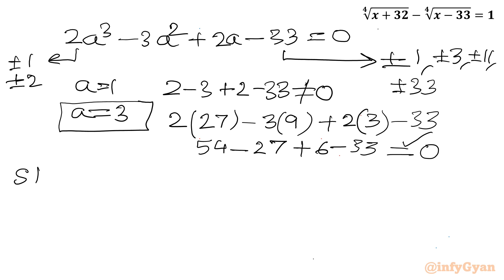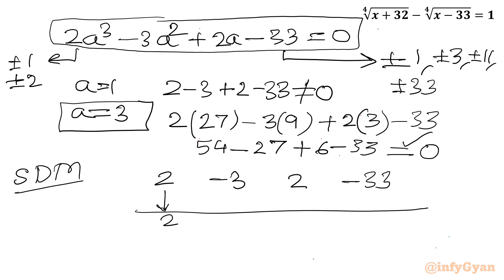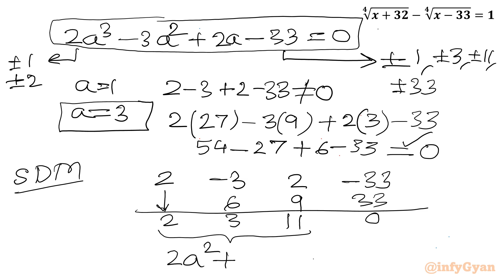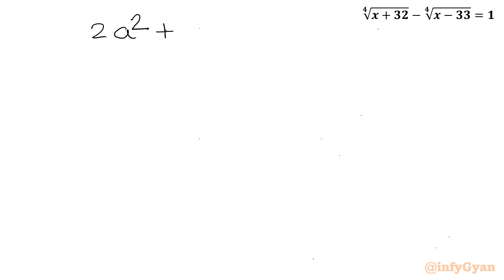Using synthetic division with root a = 3 and coefficients 2, -3, 2, -33: we get 2, then 3×2=6 giving -3+6=3, then 3×3=9 giving 2+9=11, then 3×11=33 giving -33+33=0. The resulting quadratic factor is 2a² + 3a + 11 = 0. So one solution is a = 3, and the remaining two solutions come from the quadratic.